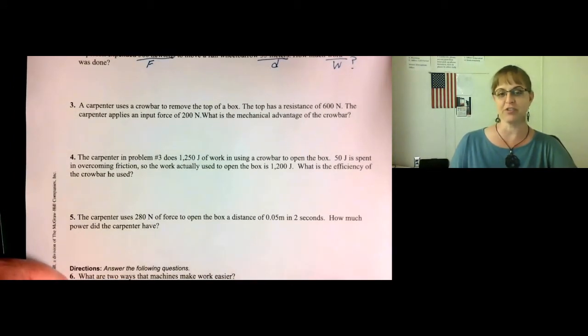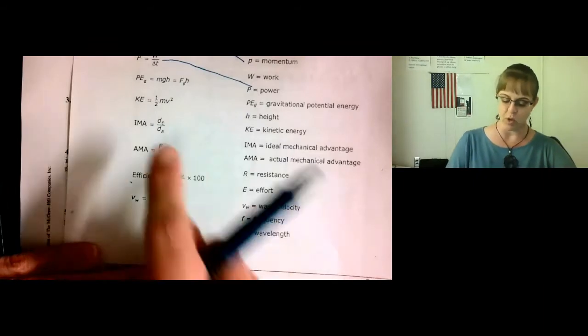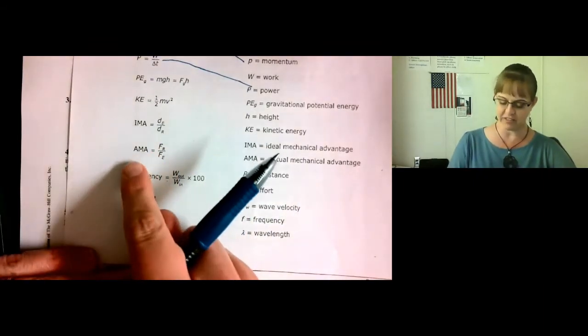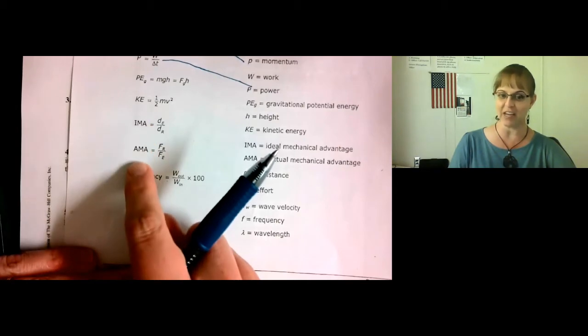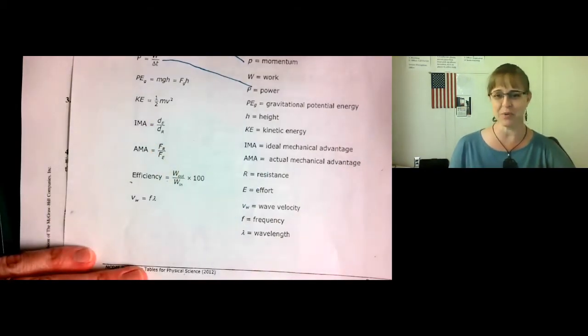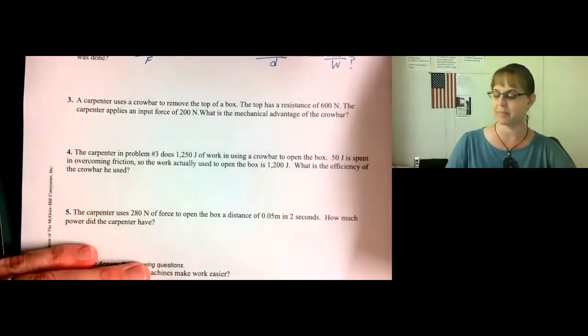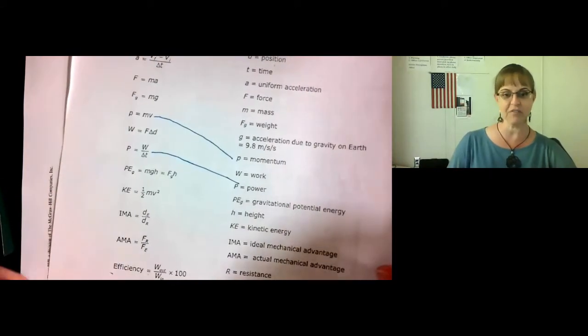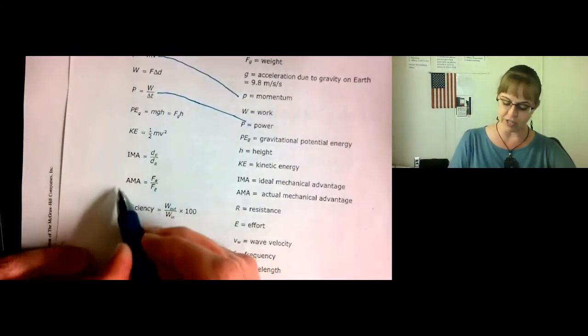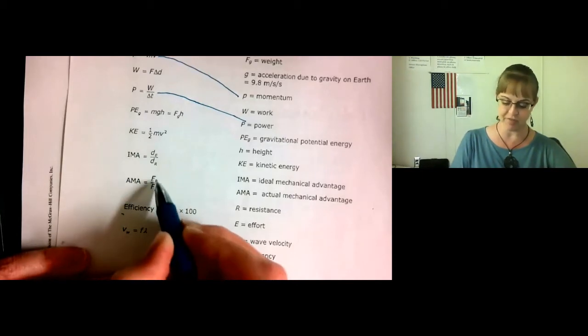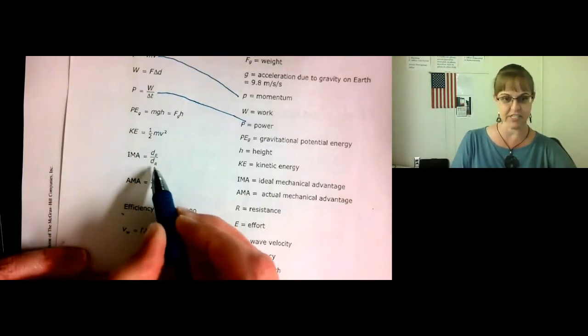Number three. A carpenter uses a crowbar to remove the top of a box. The top has a resistance of 600 newtons. The carpenter applies an input force of 200 newtons. What is the mechanical advantage of the crowbar? So on our reference table, we actually have two mechanical advantages. We were given newtons, a unit of force. Therefore, we're going to use the actual mechanical advantage, which uses force, rather than the ideal, which uses distance.